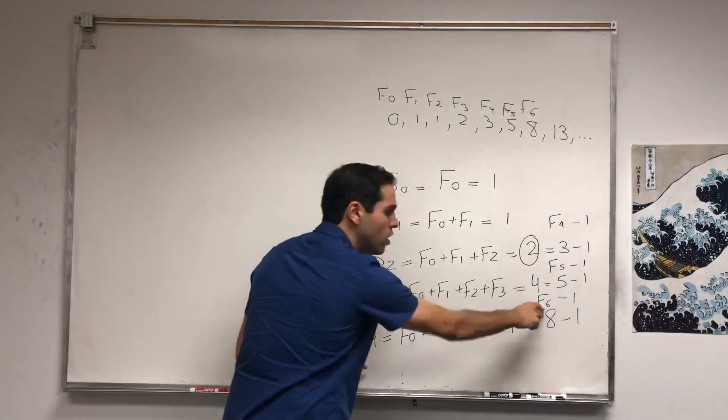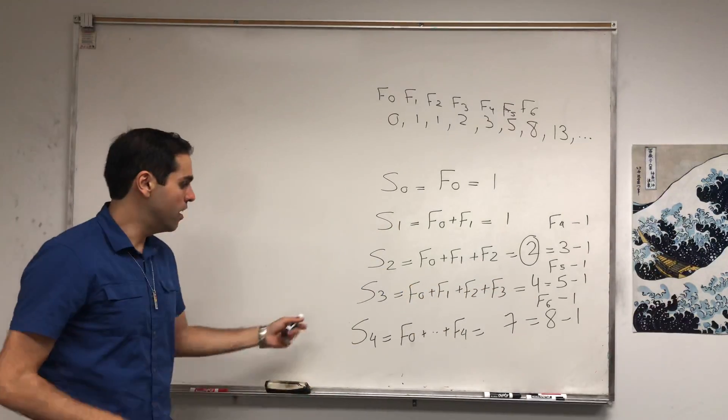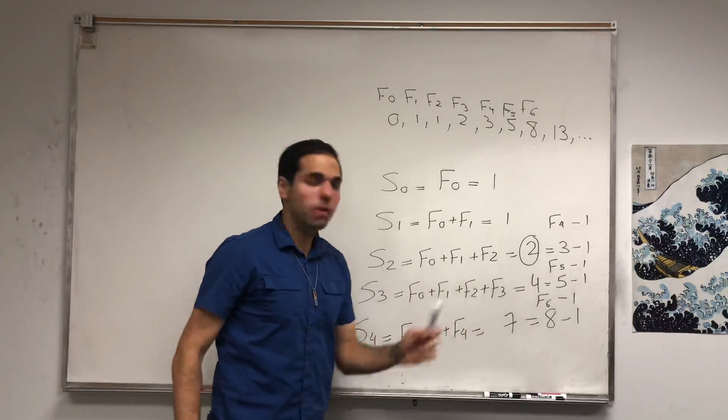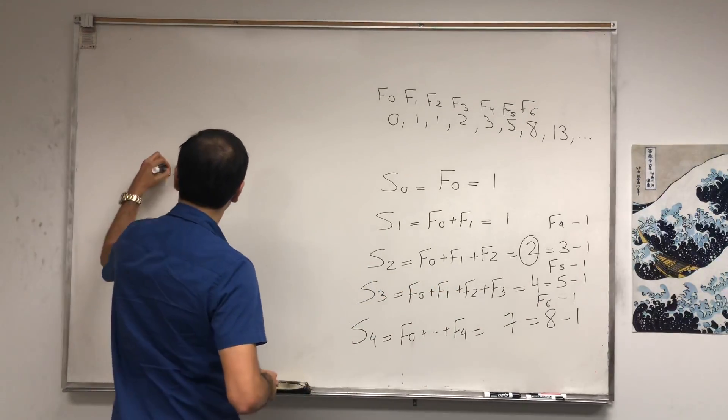In other words, to get the sum of the Fibonacci numbers, you have to go two terms ahead. So to get Sn, you need Fn+2 minus 1. So here's our conjecture.